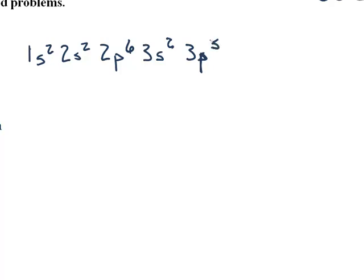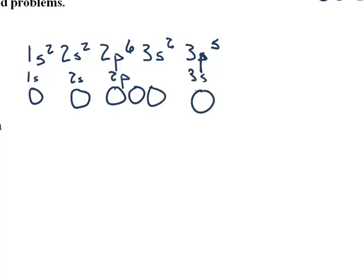Now my orbital notation is going to be the 1s, the 2s, the 2p. Now remember, s has 1 orbital, p has 3, and then 3s has 1 orbital, 3p has 3 orbitals. And I'm going to put in my 17 electrons.